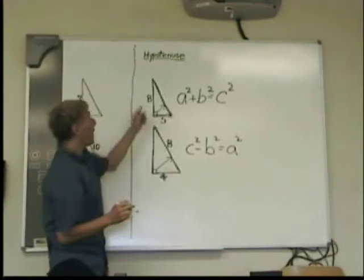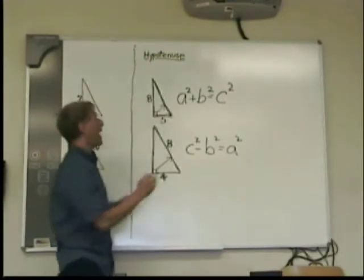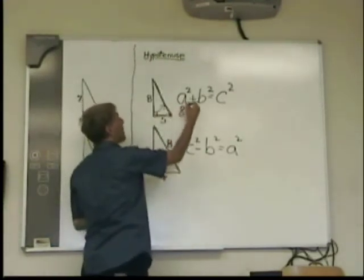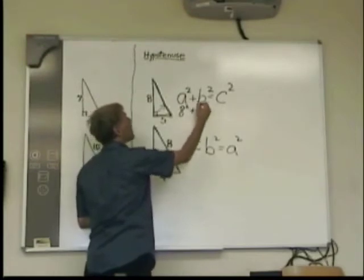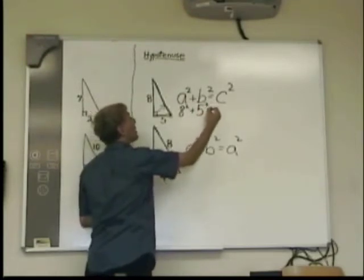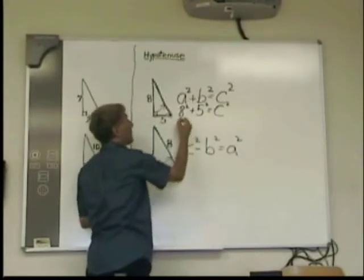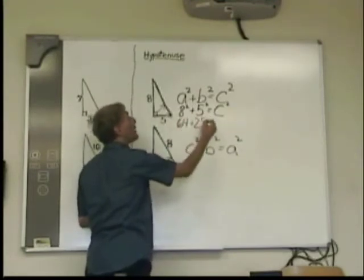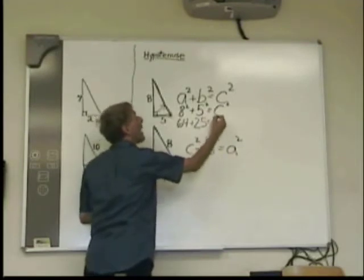Over here, my two sides are 8 and 5. So I do 8 squared plus 5 squared equals C squared. That's 64 plus 25. That equals 89.